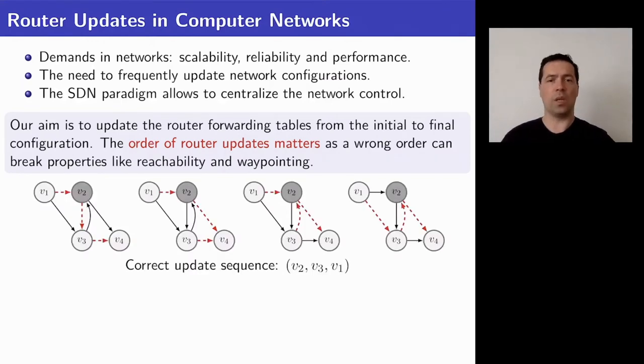In this small example we see an initial configuration that routes packets from v1 to v4 via the node v2 that is called the waypoint and we would like to change it to the final configuration that is also visiting the waypoint but traversing the edge between v2 and v3 in the opposite direction. And we can do this by scheduling the updates of the individual routers in this order.